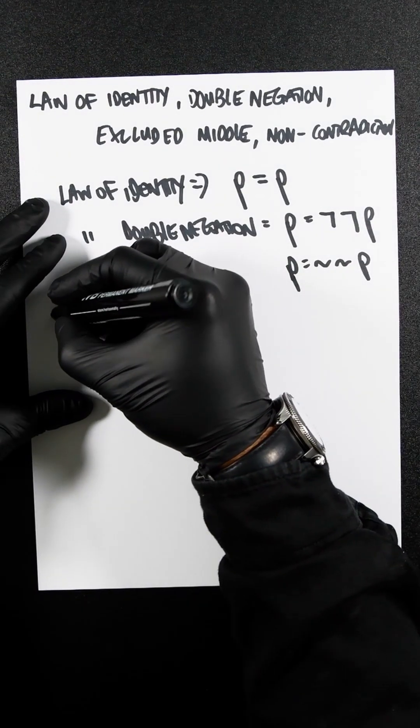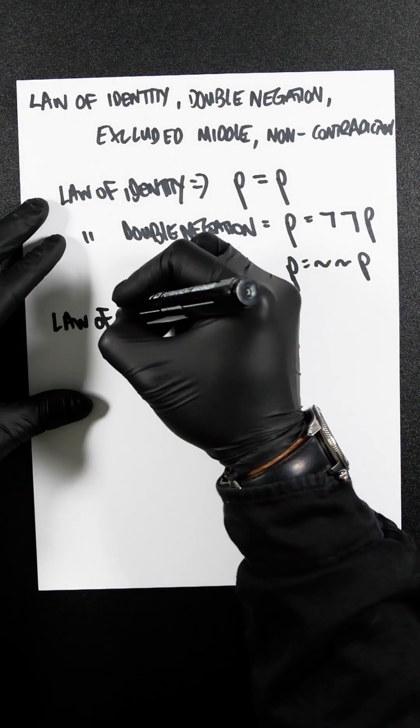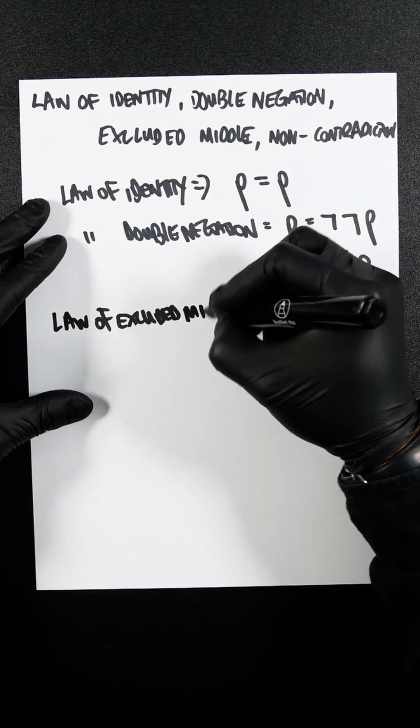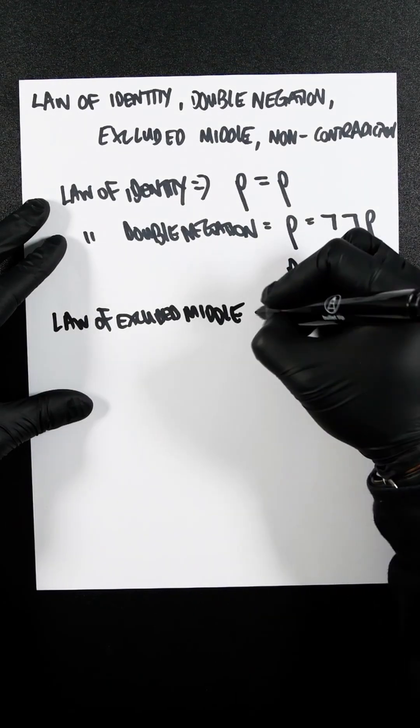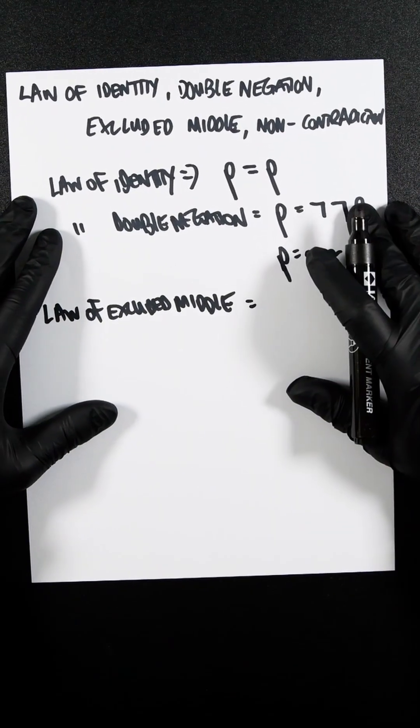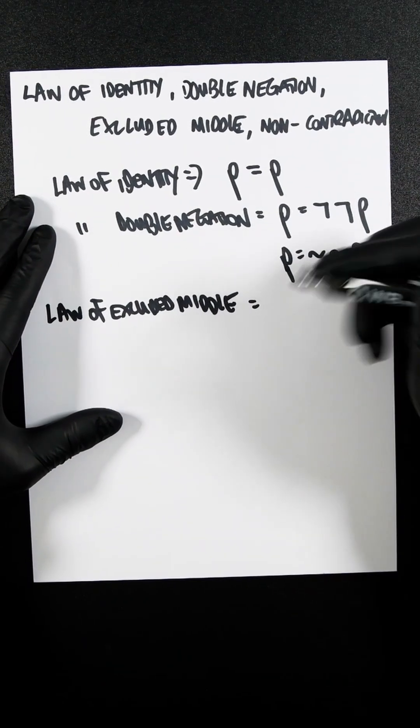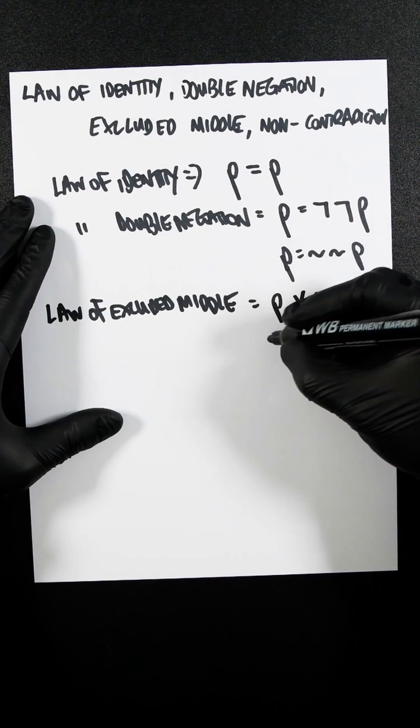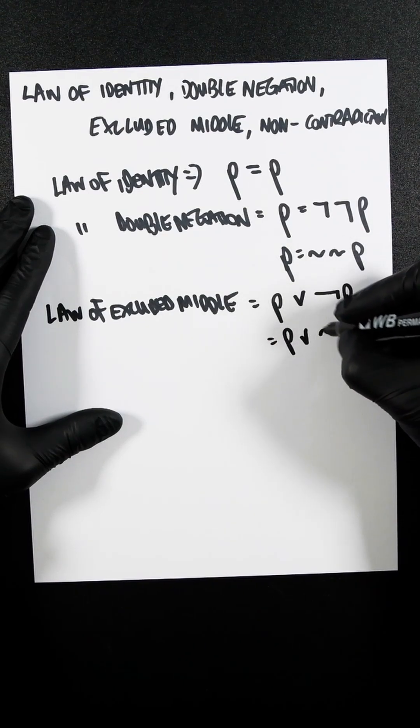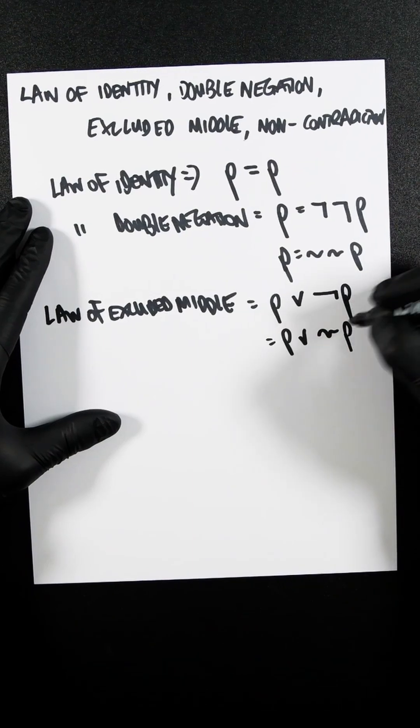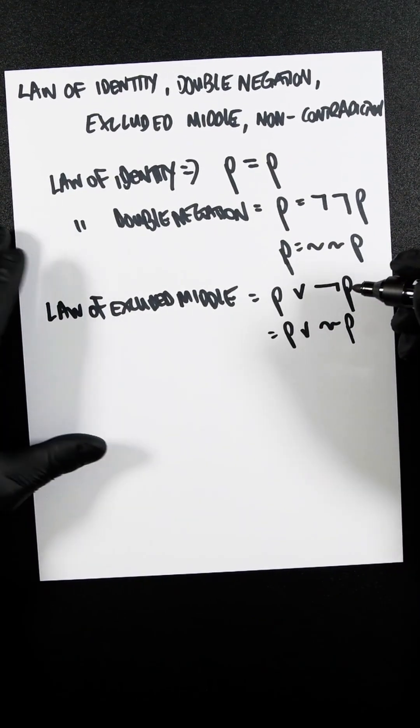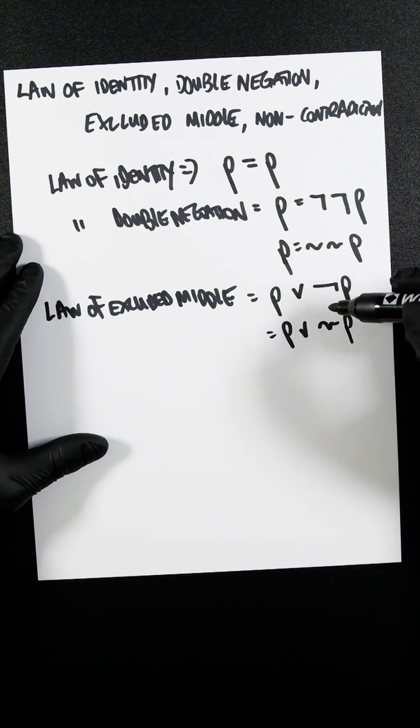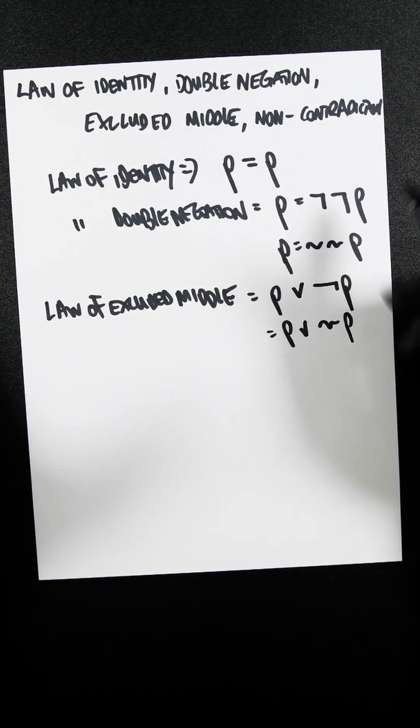So then there's the law of excluded middle. So this is P or not P, and I'll also represent it as P or squiggly P, which is pretty simple. If P or not P, it's one or the other. It is something or isn't something.